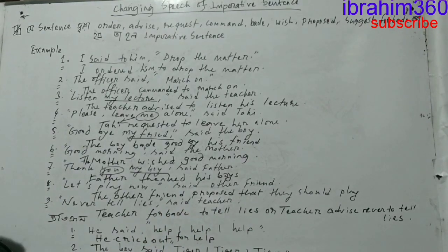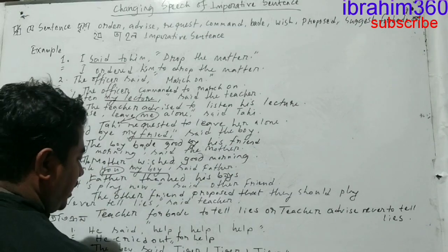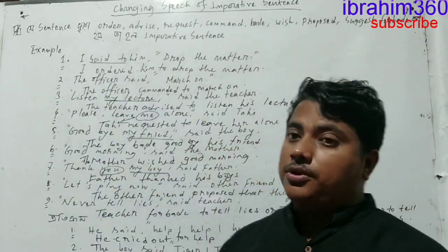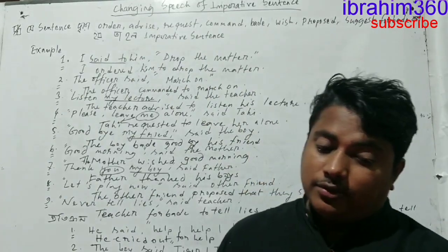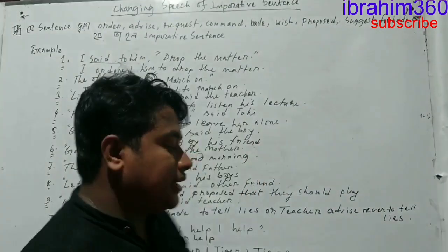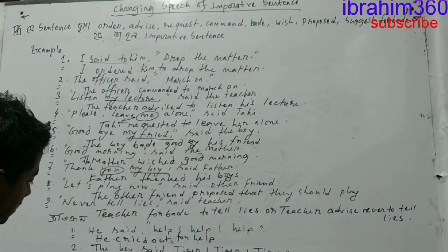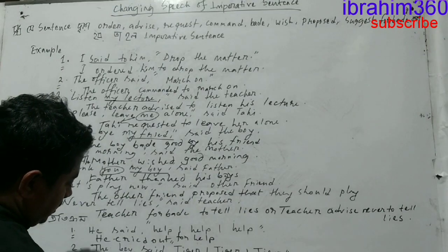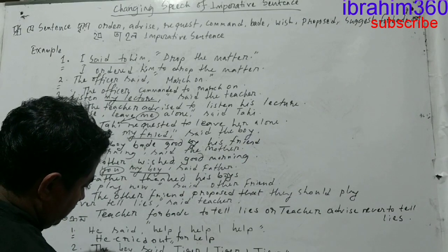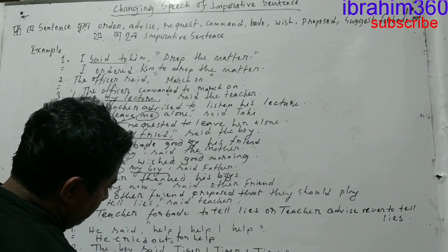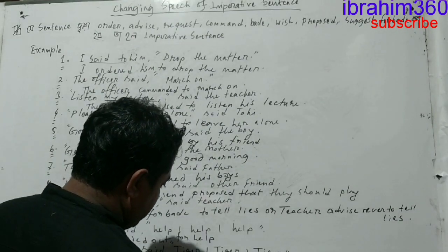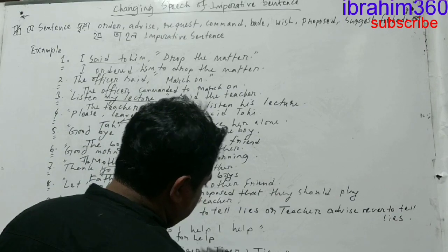Then for the next sentence: the boy said 'tiger, tiger, tiger'. Actually 'tiger' — is it a noun or a verb? Not a verb. Then how is it an imperative sentence? Actually the word 'tiger' means 'run away — there's a tiger'. It is an imperative sentence, and he is shouting. So: the boy shouted by saying 'tiger'.